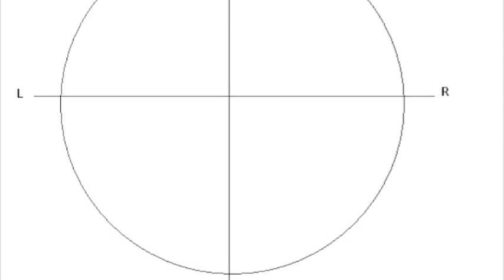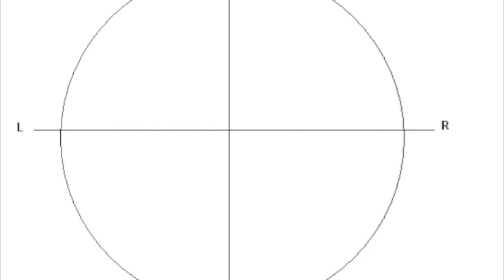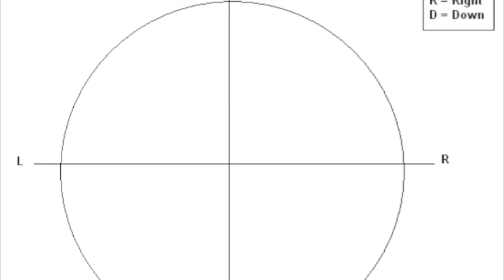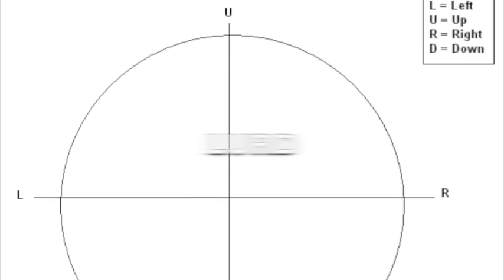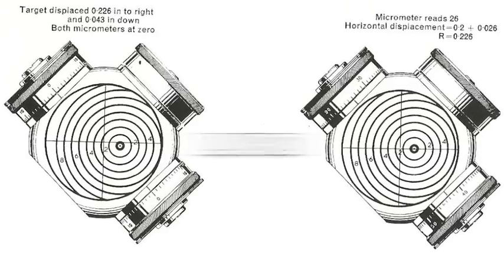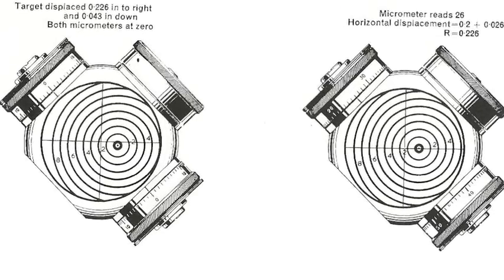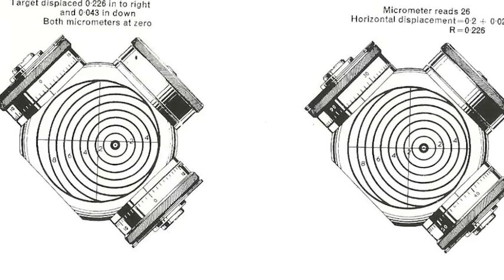A useful convention to stop any confusion about what's plus and what's minus is the LURED convention. So for this convention L left U up R right D down.